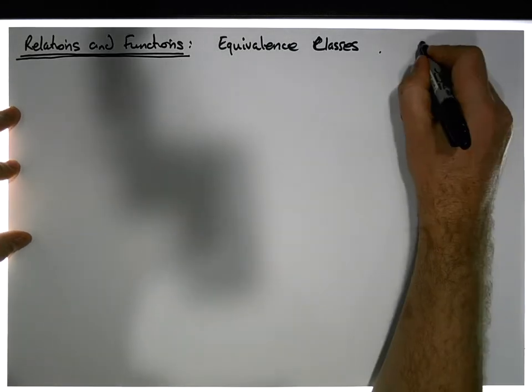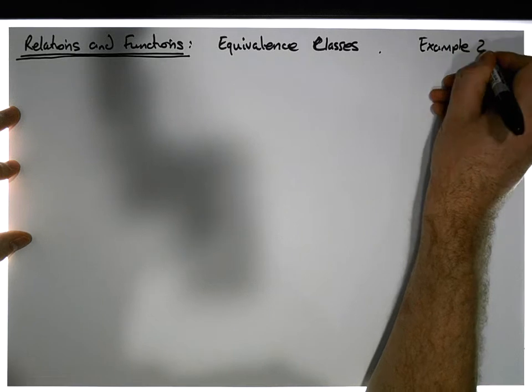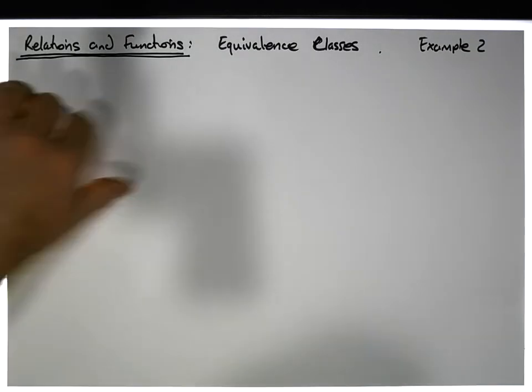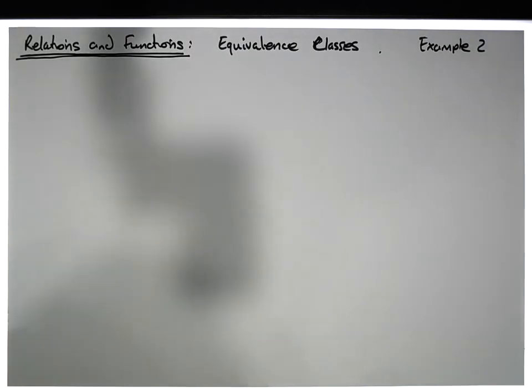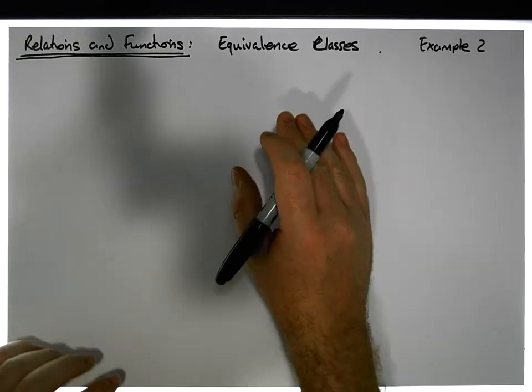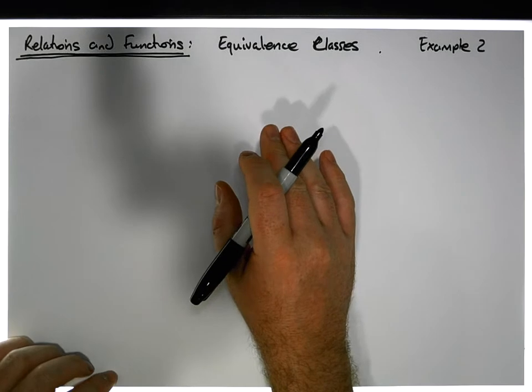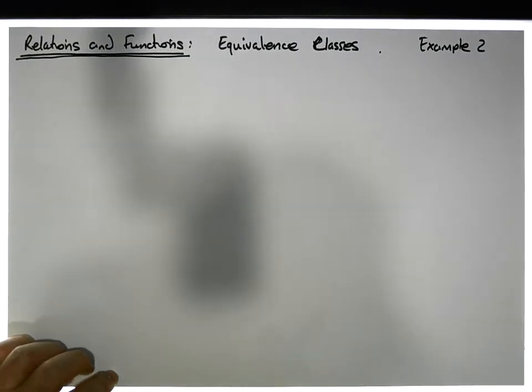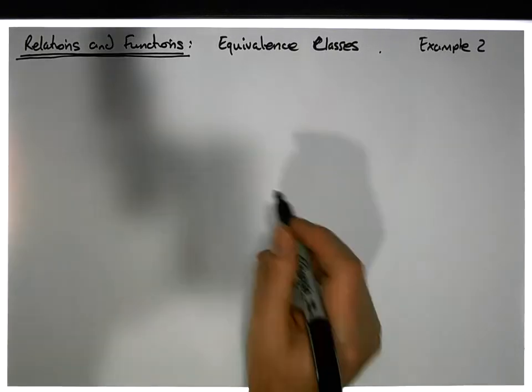And actually this is our second example, so this is example two in relation to equivalence classes. Let's actually define what we mean by an equivalence class first of all, and then let's show some of the consequences of an equivalence class, in particular, how to identify the equivalence classes for a particular equivalence relation, and also just to show that them equivalence classes actually form a partition of the set that the relation is constructed on.